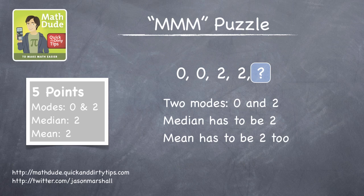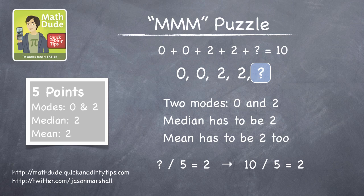So what does the final number have to be to get a mean of 2? Well, there are lots of ways to approach the problem, but here's one. What number divided by 5 is 2? That's right, it's 10. 10 divided by 5 equals 2. So our list of five numbers has to add up to 10 in order for the mean to be 2.